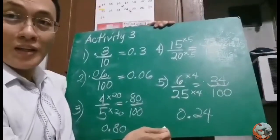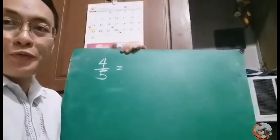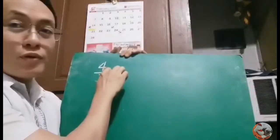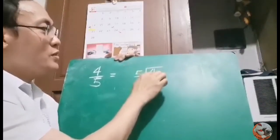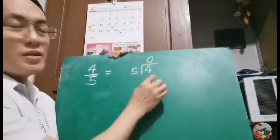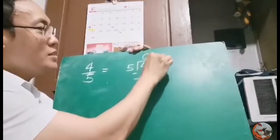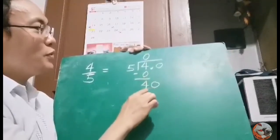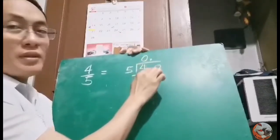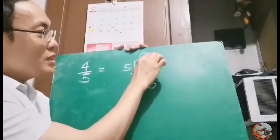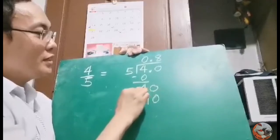It is not read as '0 point 24' but as 24 hundredths. Another way of converting 4 fifths to decimal is by division. Your numerator 4 becomes the dividend, and 5 is the divisor. 4 divided by 5 cannot be done, so write 0. 4 minus 0 is 4. To make it a decimal, add a decimal point and 0, bringing down to get 40. 40 divided by 5 is 8. Don't forget to write the decimal point aligned in the quotient. And that gives 0.8.